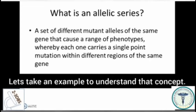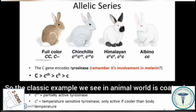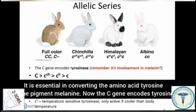Let's take an example to understand this concept. The classic example we see in the animal world is the rabbit coat color. We learned earlier about albinism, the enzyme tyrosinase, and how it is essential in converting the amino acid tyrosine into the pigment melanin.